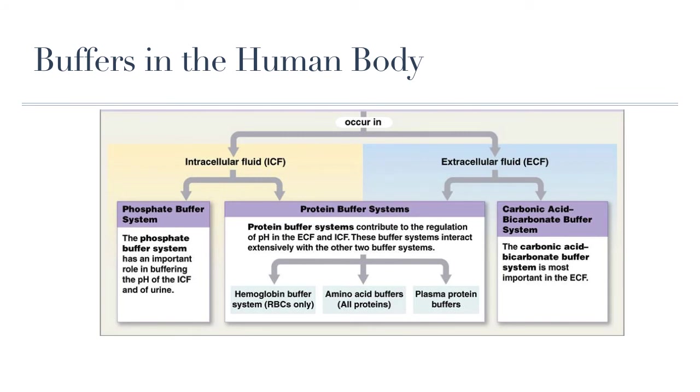So, there are quite a few buffers in the human body that help control the pH of both the intracellular fluid, that is the fluid inside our cells, and the extracellular fluid, that is our urine, for example, or our blood. The most important extracellular buffer system is the carbonic acid bicarbonate buffer system that happens in our blood. And this is the one that we will explore in more detail.